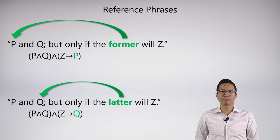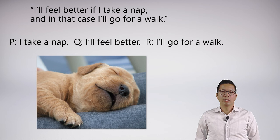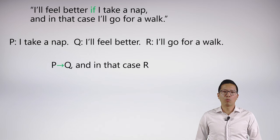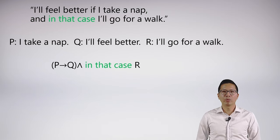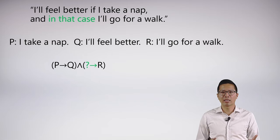Here's a symbolization with 'the latter.' In this last example, this is where things can seem confusing, but I'll try and spell it out so it's not. 'I'll feel better if I take a nap, and in that case, I'll go for a walk.' You can see the symbolization is going to be very straightforward, except for one thing. We have the conditional P arrow Q, and then I also need to symbolize 'and in that case, R.' And is just conjunction. The only question is, how do I symbolize 'in that case'? Well, it really means if something happens, then R will occur. So I know I have a conditional, but I don't know what 'in that case' means — which case am I talking about? I hope you see we only have three possibilities: Q arrow R, P arrow R, or (P arrow Q) arrow R.